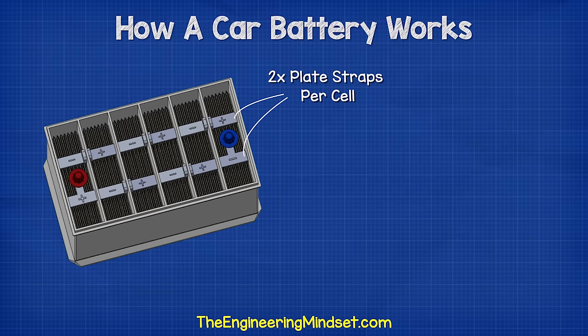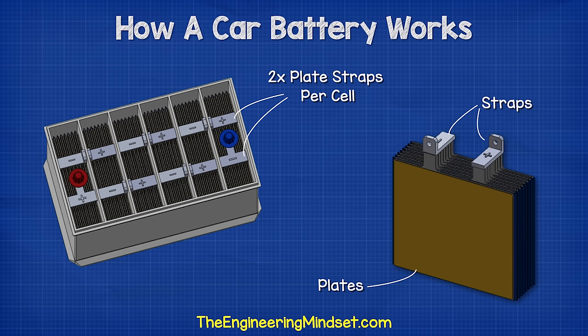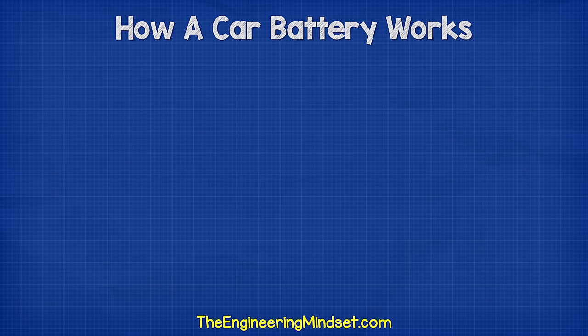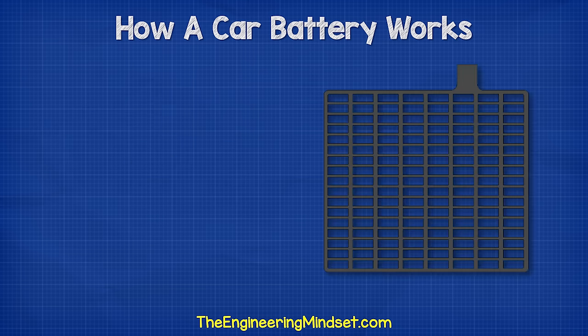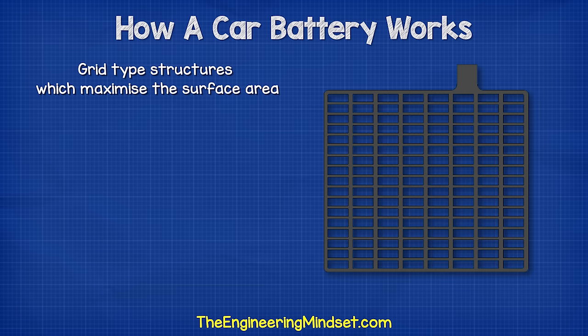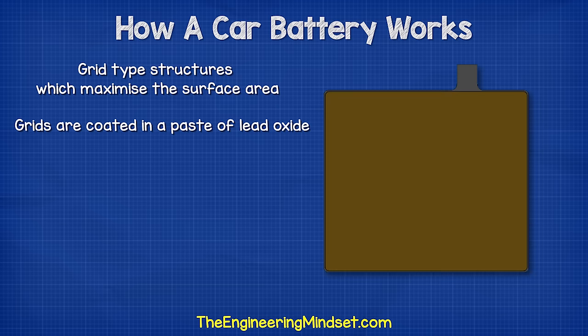Notice there are two plate straps in each cell — one positive and one negative. These are called plate straps because each strap is connected to a number of plates, which are sheets of lead. The plates are formed into grid-type structures which maximizes the surface area. The grids are coated in a paste of lead oxide.